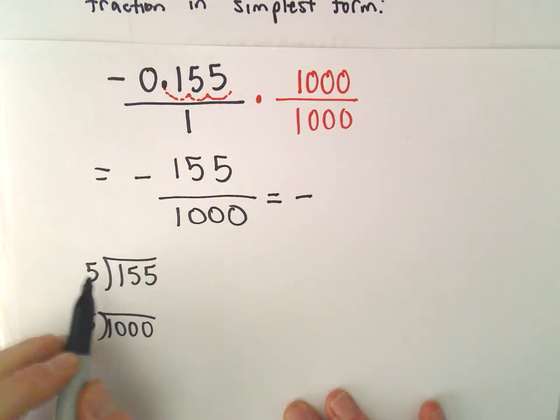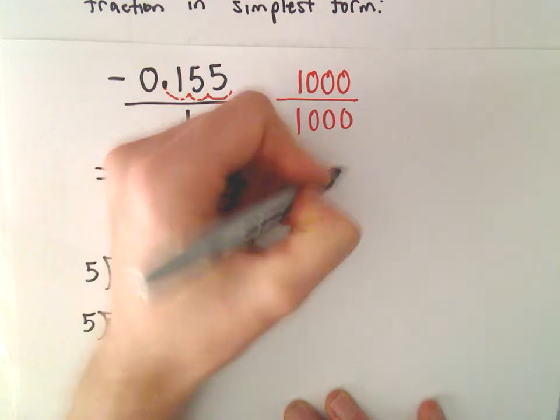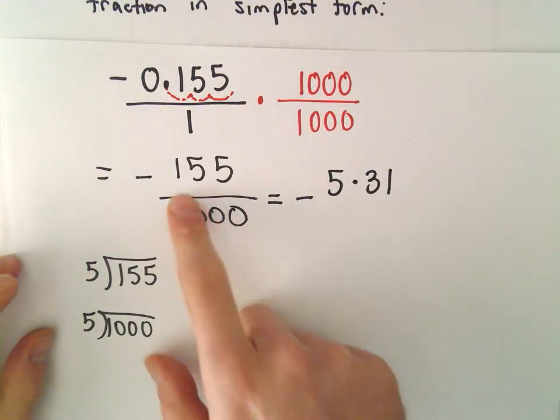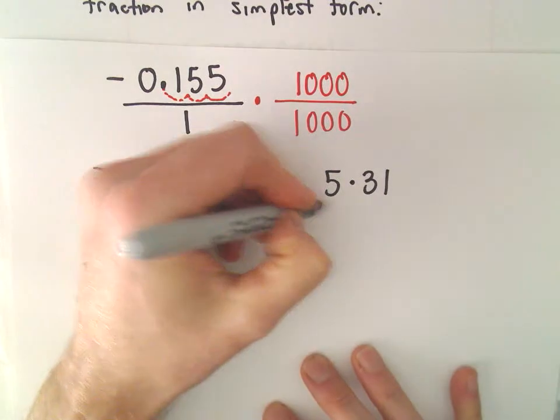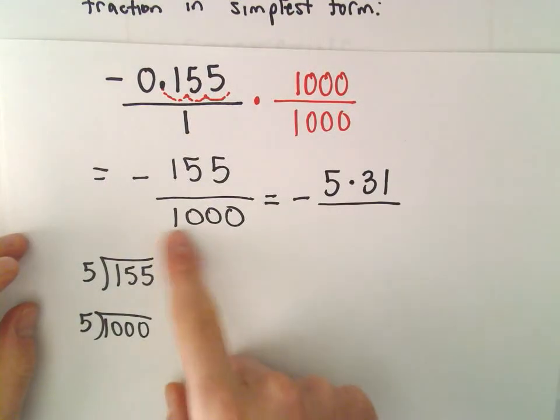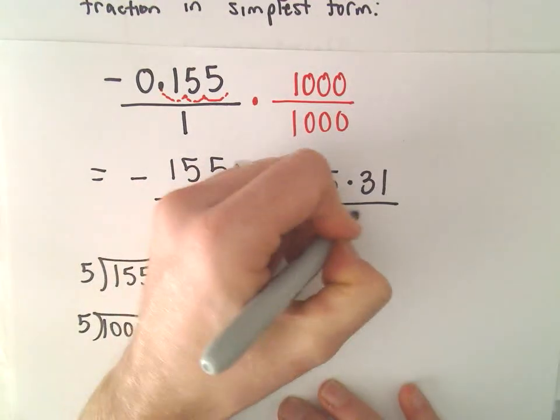I always think about it. Let's see. 5 times 30 would be 150. We would need another 5. So I think if we do 5 times 31, that's going to give us 155. Let's see. 5 times 2 would be 10. So 20 would be 100. And 200, I think, would give us 1000.